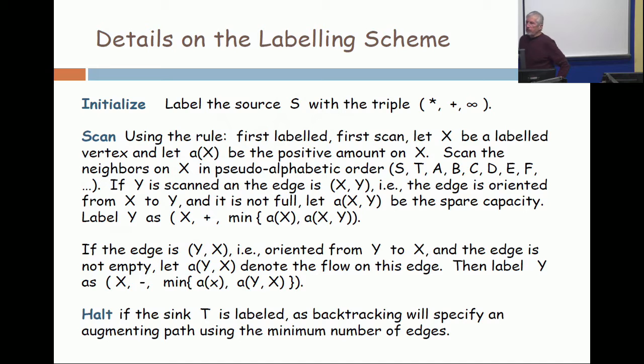The plus means it got it from something that just came in. And infinity - there's no bound on the amount that the source is capable of producing. Later I'll make a comment because in many real world situations there really is a bound. The source does have limited capacity.